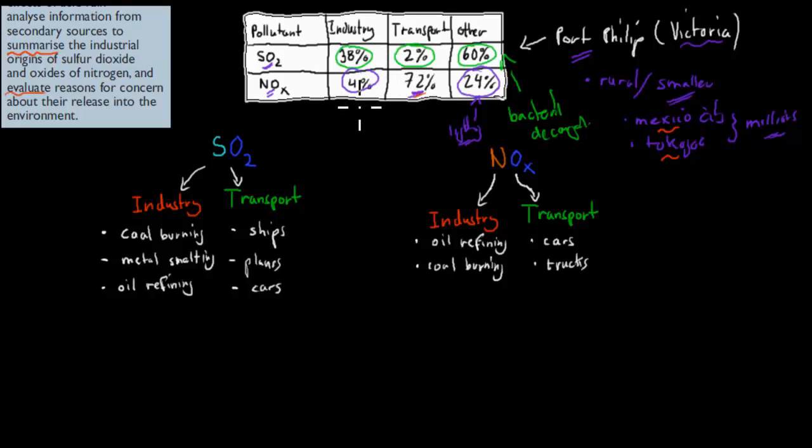And this asks us to summarize the industrial origins of sulfur dioxide and oxides of nitrogen. So, we go industrial, meaning in this case both the industry and the transport. These two are the ones we have to summarize. So, for sulfur dioxide, which is this here, sulfur dioxide origins are for industry, from an industrial point of view, coal burning.